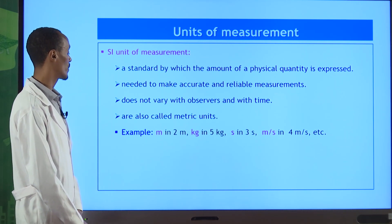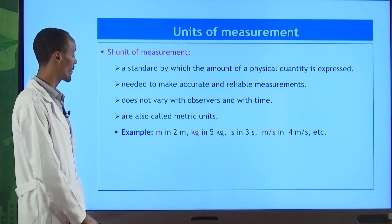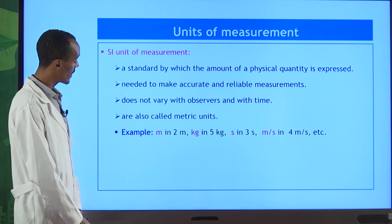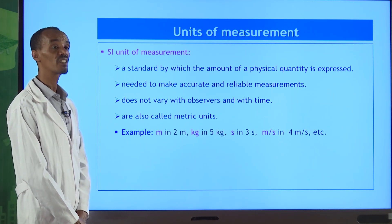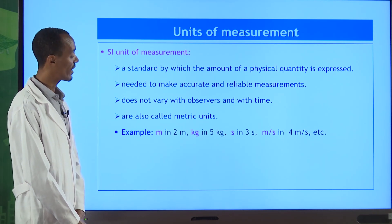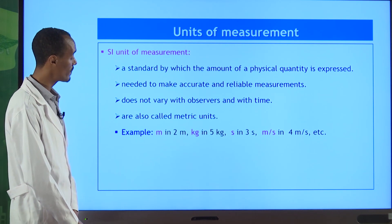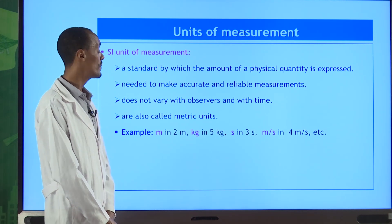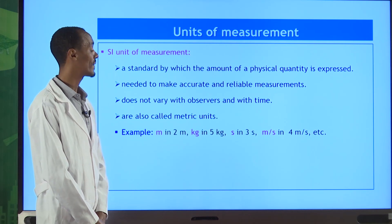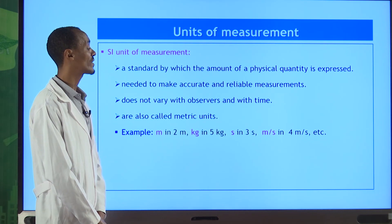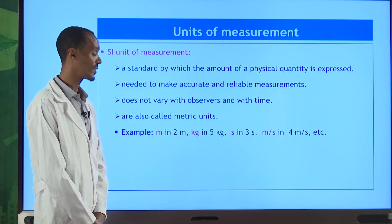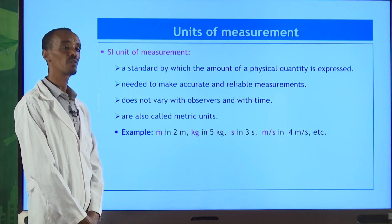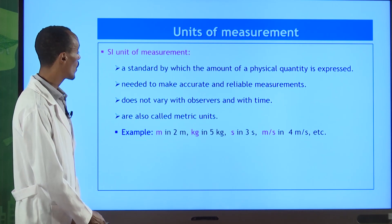SI units can also be called metric units. For example, two meters — symbol m — is the SI unit for length or distance. Five kilograms — kg — is the SI unit for mass. Three seconds is the SI unit for time. Meters per second is the SI unit for speed or velocity. These are reliable and do not vary based on the observer.